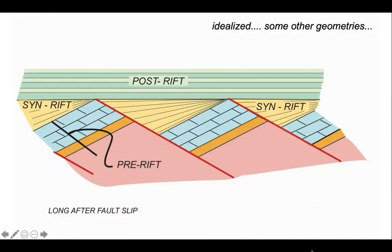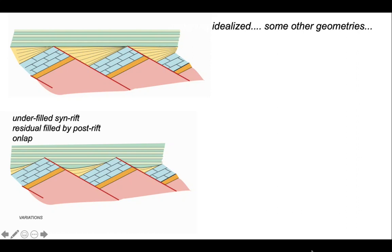This cartoon that we use to set the problem up is somewhat idealized, so let's explore some other geometries. Down at the bottom there we have a situation where the synrift stage is so-called underfilled, in other words the sedimentation did not keep pace with the faulting. In this case the residual bit of the basin is filled after the faults have moved by post-rift strata, and these can be discriminated from the synrift and pre-rift by on-lap of those post-rift strata onto the older rocks.